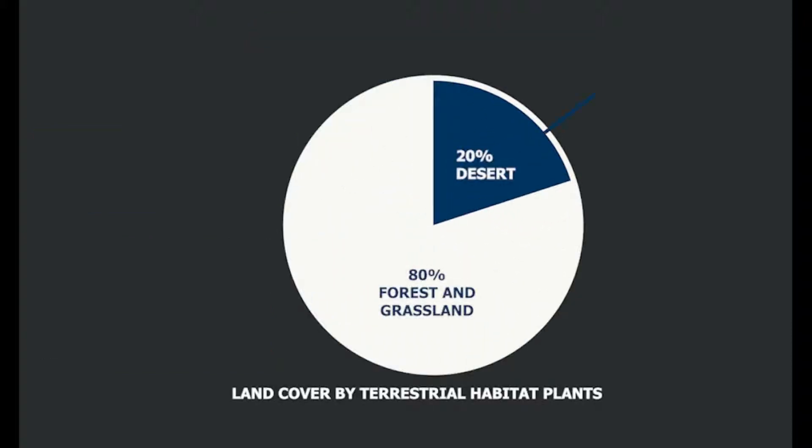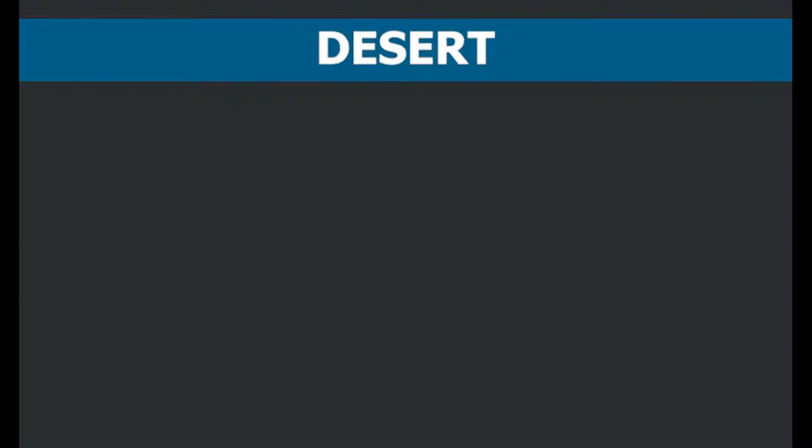Desert covers around 20% of the total area of Earth and rainfall here is very less — it rains only 25 cm annually. There are different types of deserts.